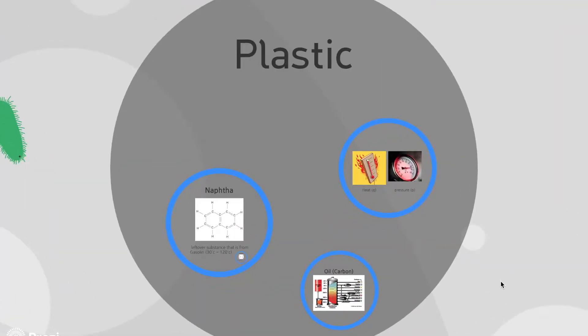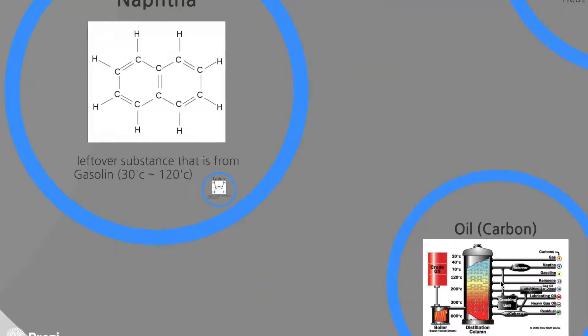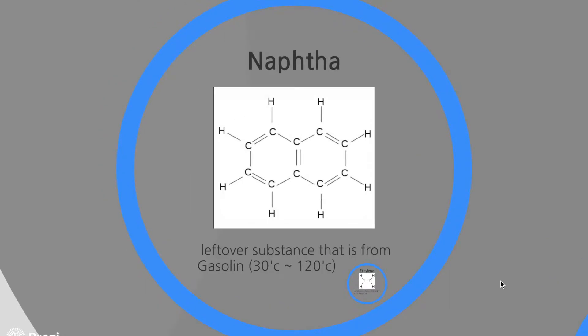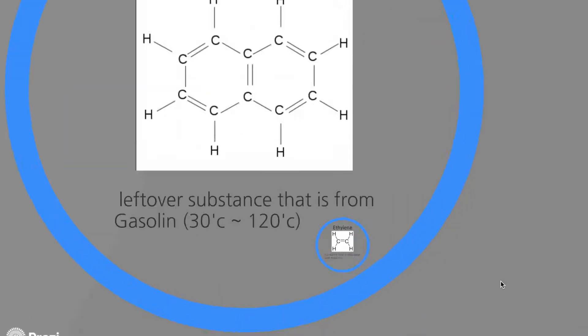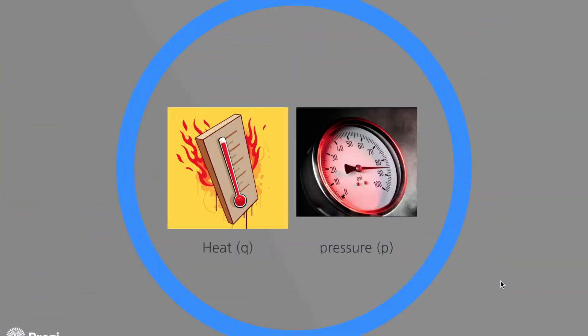If we want to know about the characteristics of plastic, we have to know about the production of plastic. It is produced when boiling oil, which is petroleum distillation. It is basically about carbon, and we can get a substance called naphtha in this production. What is naphtha? It is a leftover substance from gasoline, produced at 30 Celsius to 120 Celsius. And when we distill naphtha, we can get a substance called ethylene. It is the main substance that produces plastic.